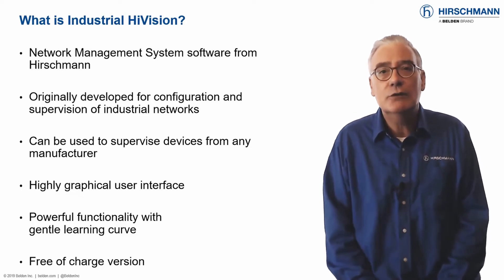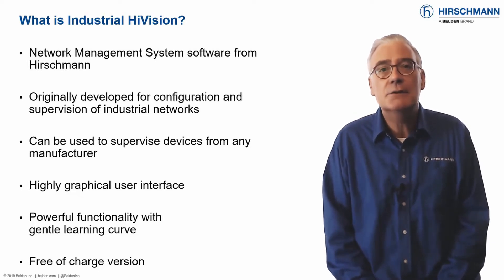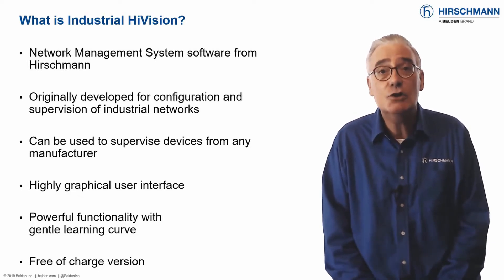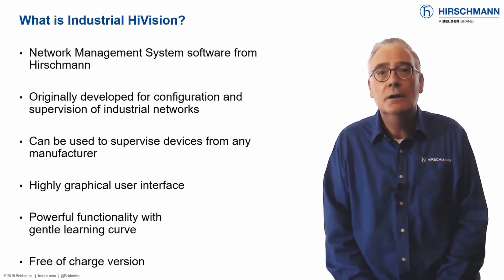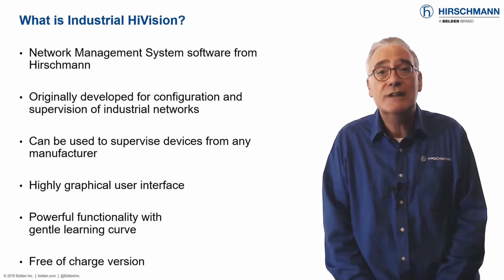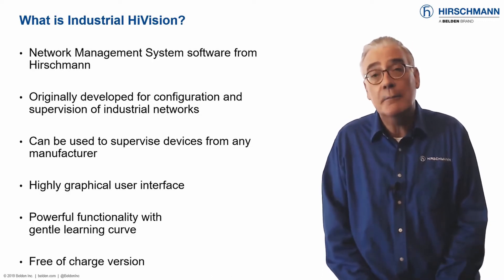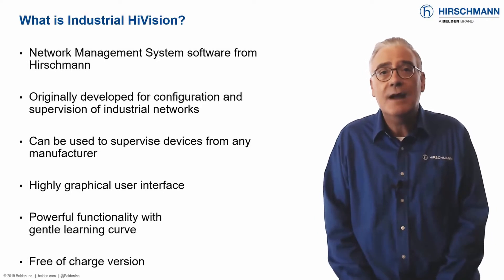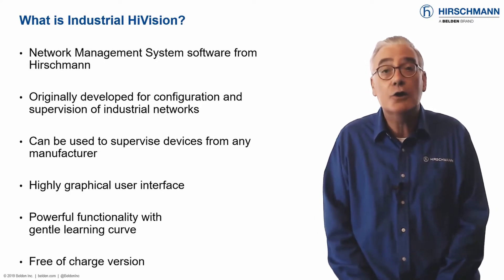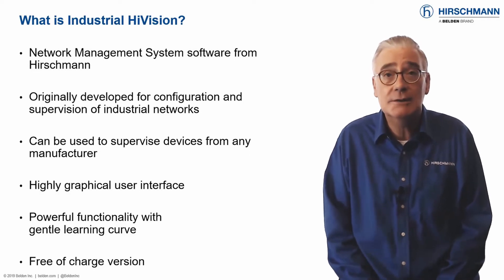Industrial HiVision was originally developed to configure and supervise industrial networks built using Hirschman equipment. Over the years, it has been developed to support equipment from any manufacturer. Today, it provides functionality which is usually only found on expensive office network applications.